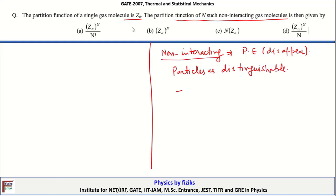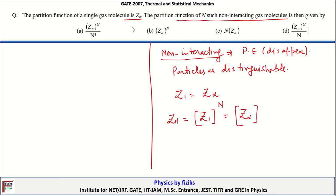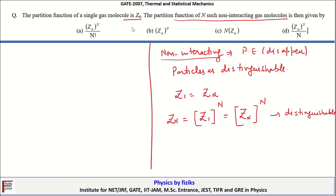If the single particle partition function is Z1, that is equal to Z-alpha, then the N-particle partition function for a system of distinguishable particles is equal to Z1 to the power N, or equivalently Z-alpha to the power N. This is when particles are distinguishable. Therefore, the correct option is B.